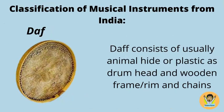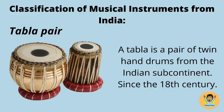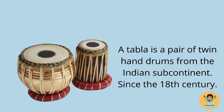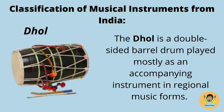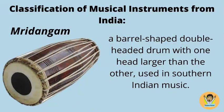Daff consists of usually animal hide or plastic as drum head, and a wooden frame or rim with chains. A Tabla is a pair of twin hand drums from the Indian subcontinent, used since the 18th century. The Dal is a double-sided barrel drum played mostly as an accompanying instrument in regional music forms. The Mridangam is a barrel-shaped, double-headed drum with one head larger than the other, used in Southern Indian music.